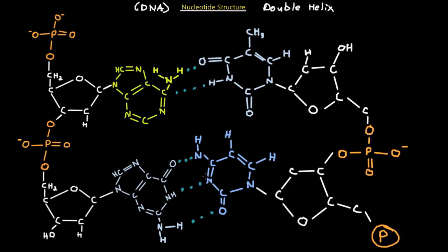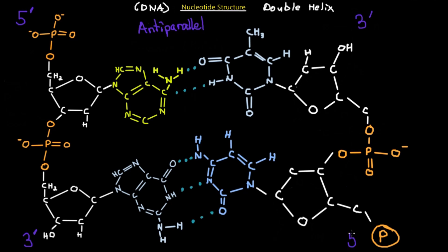Let's take a look at the structure of the double helix. Here we have the three-prime position on the hydroxyl and the five-prime position on the phosphate, and the bonding is anti-parallel. On one side of the double helix it is the three-prime end with the hydroxyl group, and on the other side it is the five-prime end. So it goes five-prime, three-prime on one strand and three-prime, five-prime on the other — it is anti-parallel.